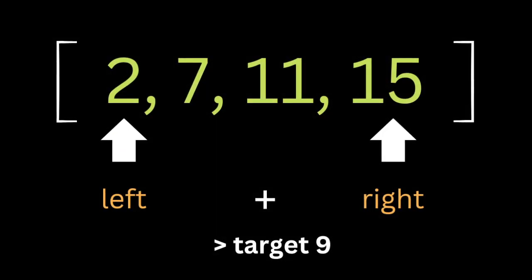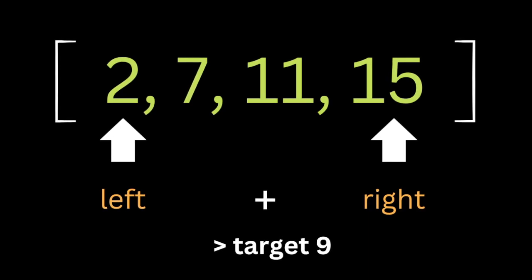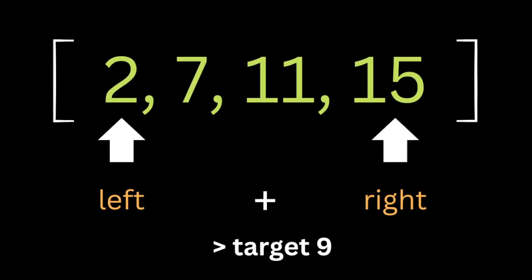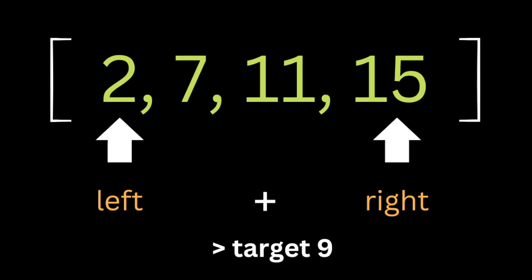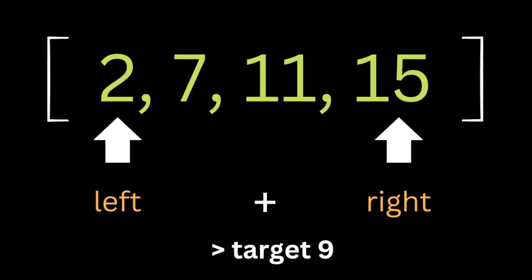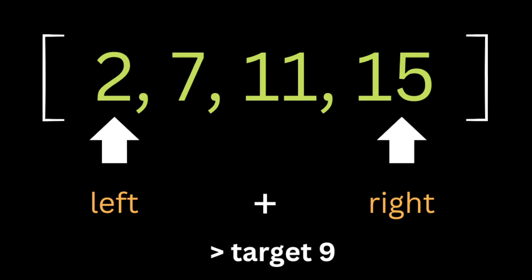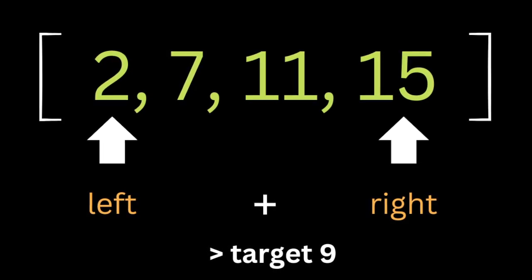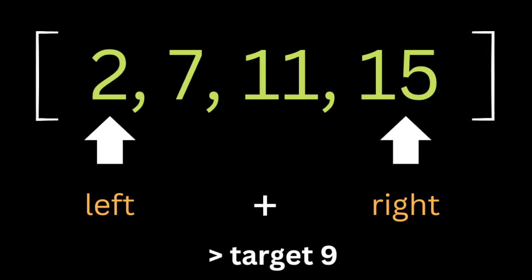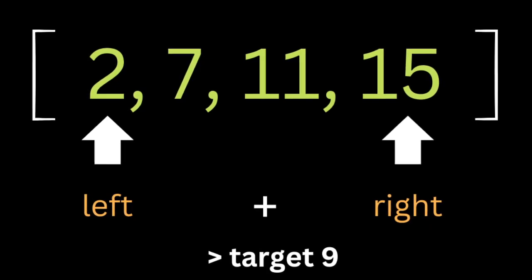The third way to solve this problem is going to be by first sorting the array, which is going to take O(n log n). Once we have a sorted array, we know that the left is the smaller and the right is the larger.